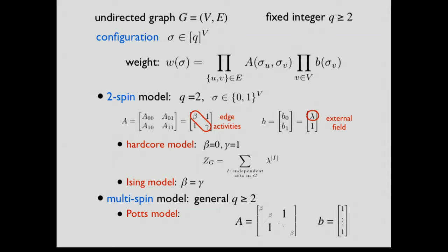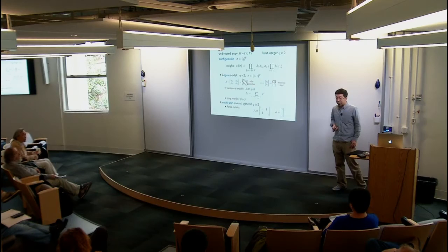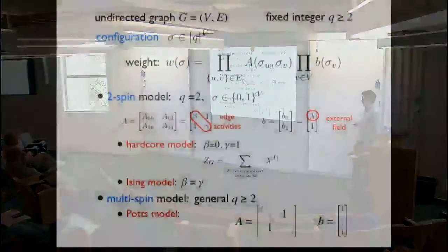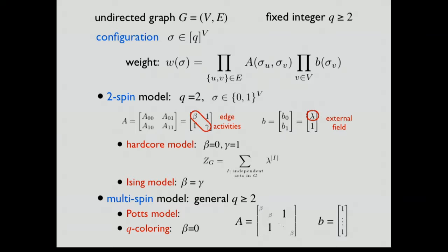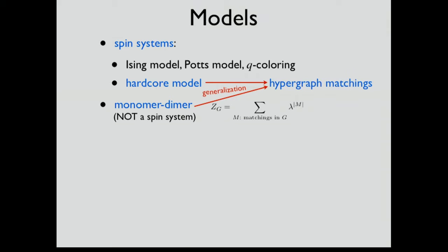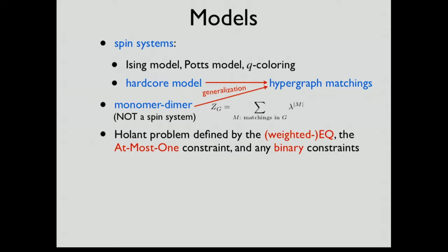An independent set means a set of vertices where every pair is non-adjacent. When beta equals zero, this is proper Q-coloring of the graph. We also consider the monomer-dimer model for matchings, which is not a spin system but is an important model. Together with the hardcore model, these two can be unified into a general framework called hypergraph matching, which is a natural subclass of Holant problems.